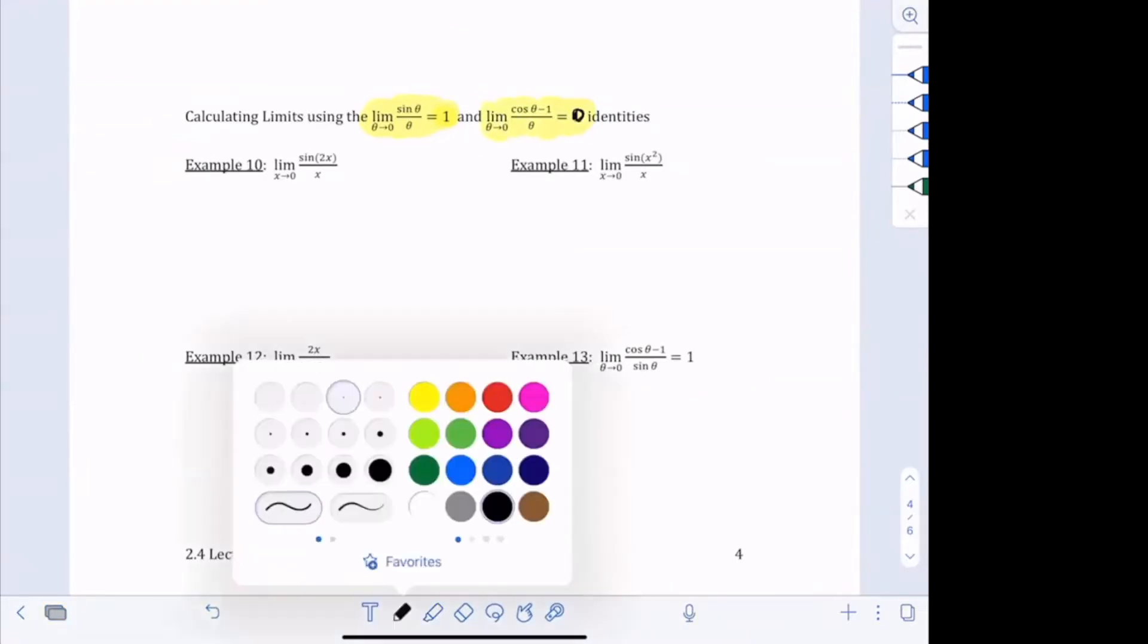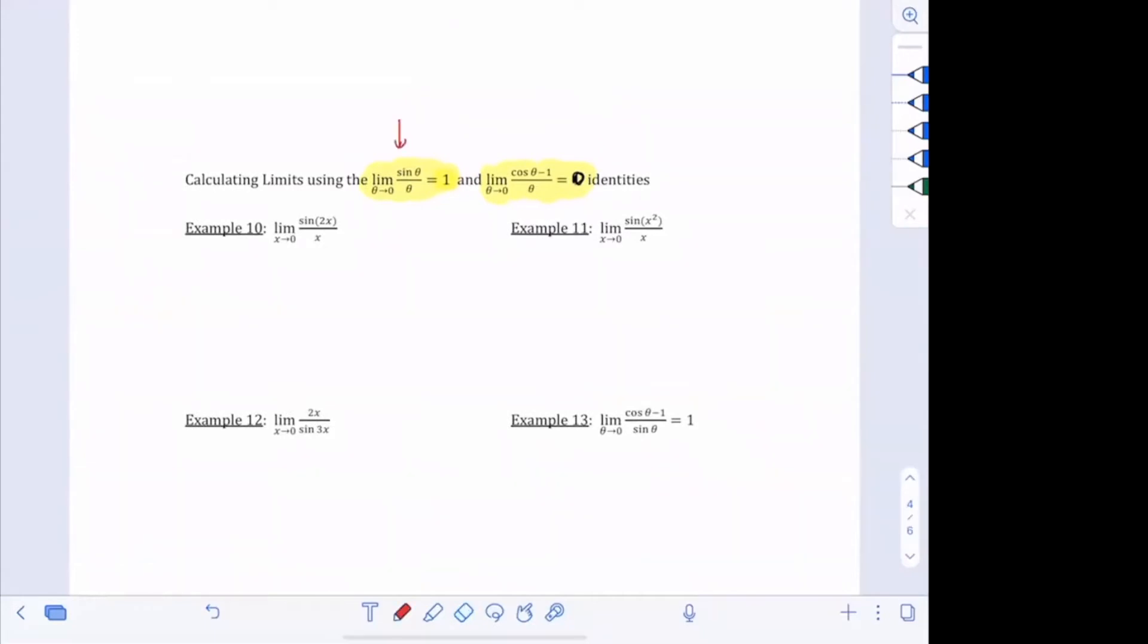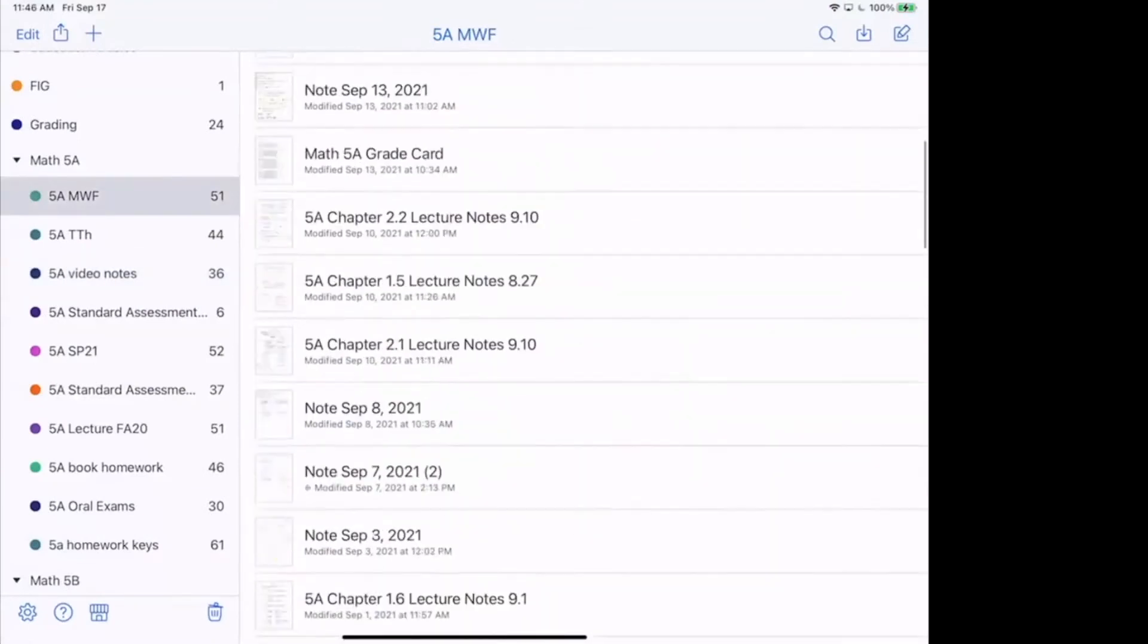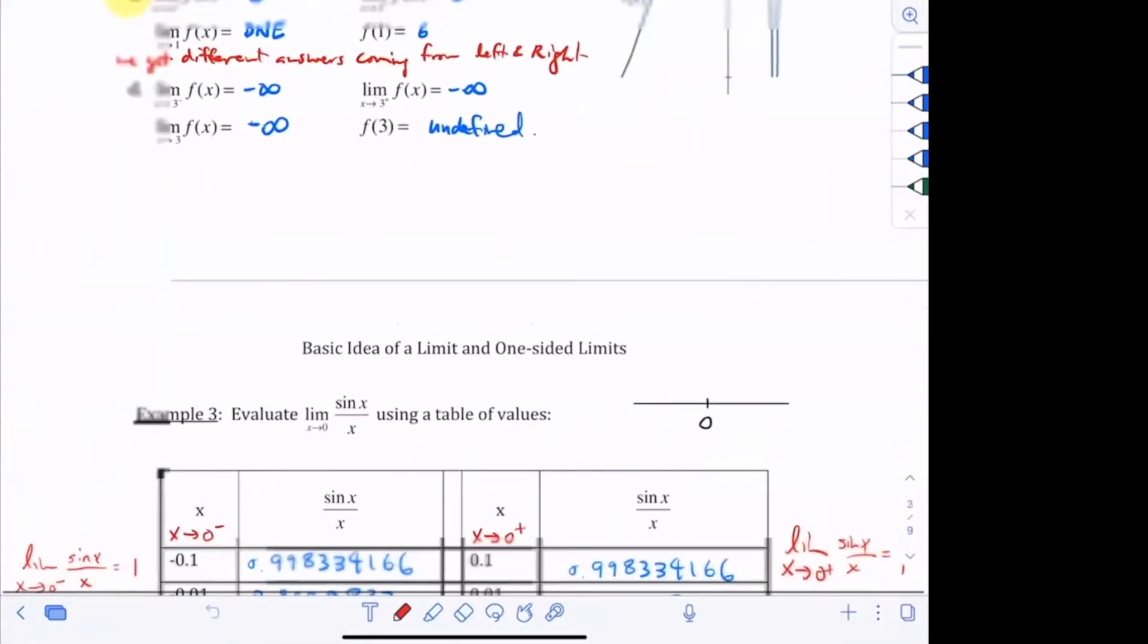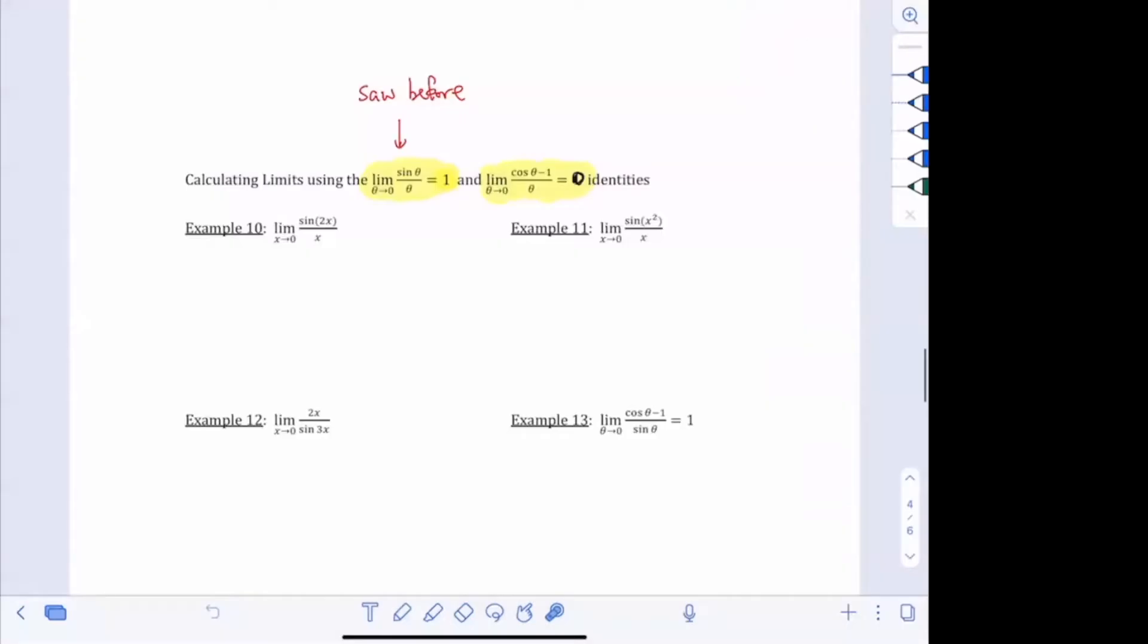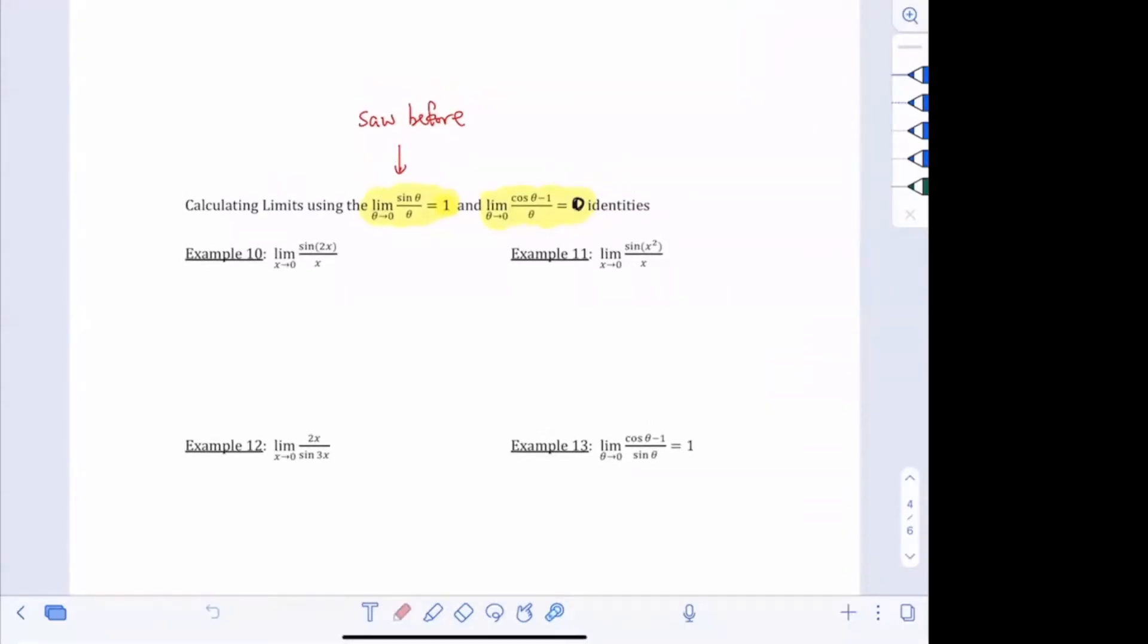And these two are important limits. This one we saw before. We saw it on the 1.5 worksheet. Just as a quick reminder, we did it right here. I had said a long time ago that limit as x goes to zero sine x over x equals one. That's a big deal for this class. We're just replacing x with theta, so I hope you can see that's the same thing. This one is used to prove derivative of the sine theta and cosine theta. So you're supposed to assume that you know that that's true.